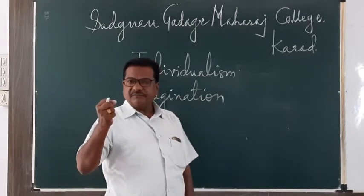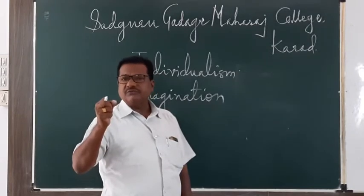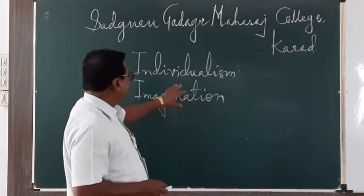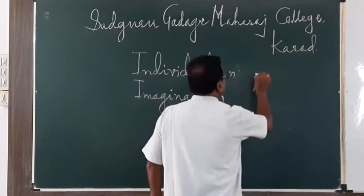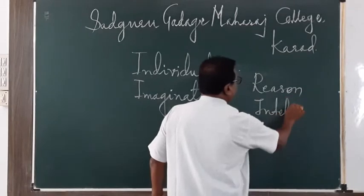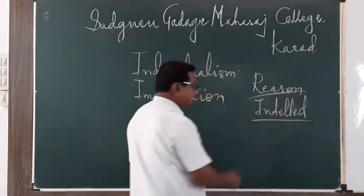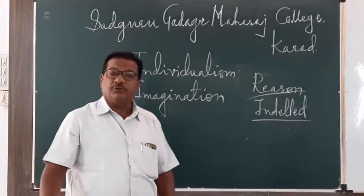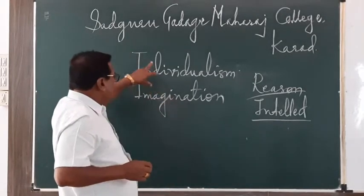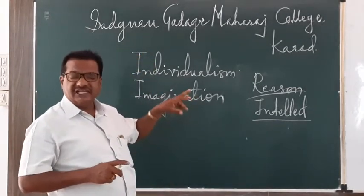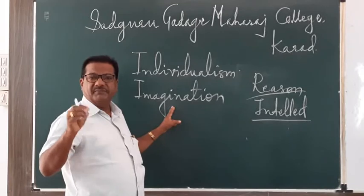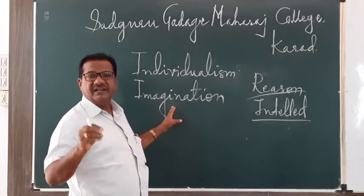Reason — that is, intellect — was very important in neoclassical poetry. Reason and wit were important for neoclassical poets of the 18th century. But to the romantic poets of the early 19th century, imagination was important. And therefore we find free play of imagination in romantic poetry of the early 19th century.